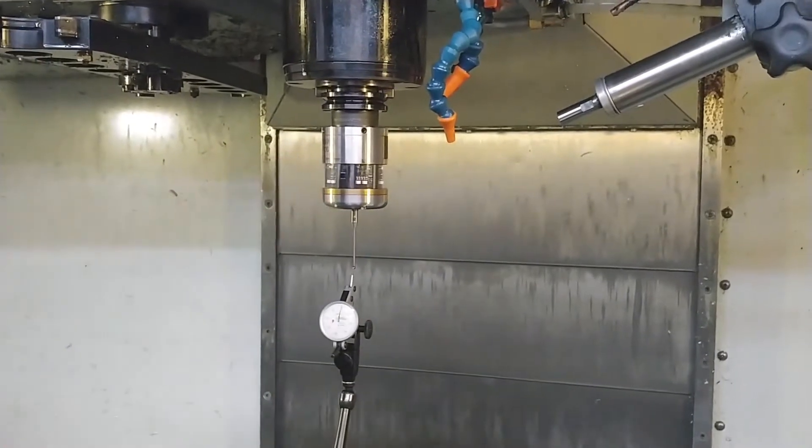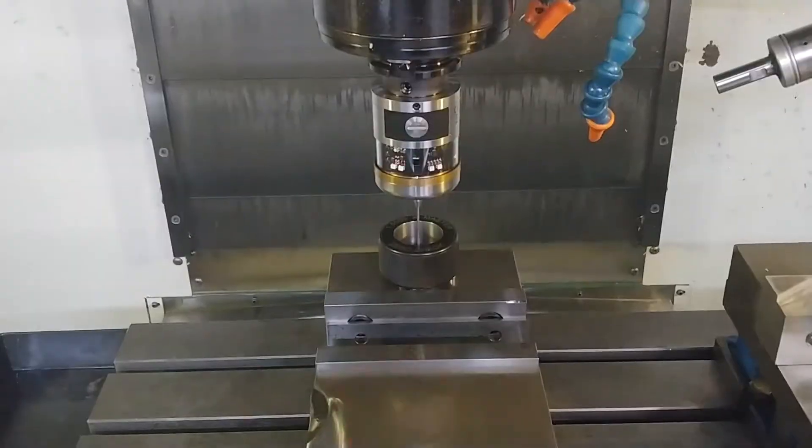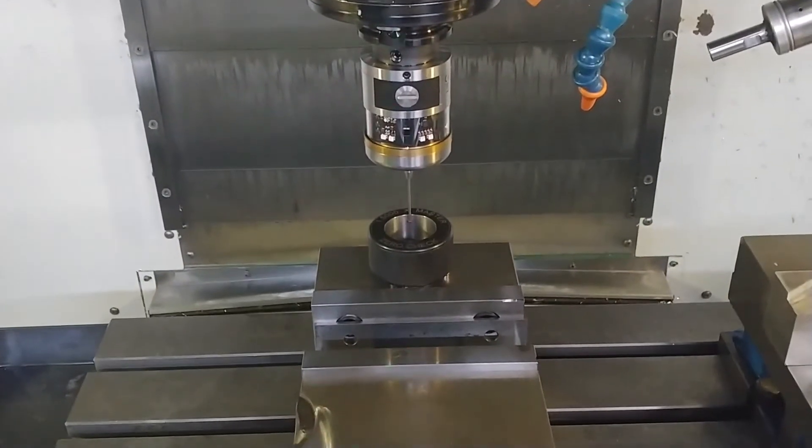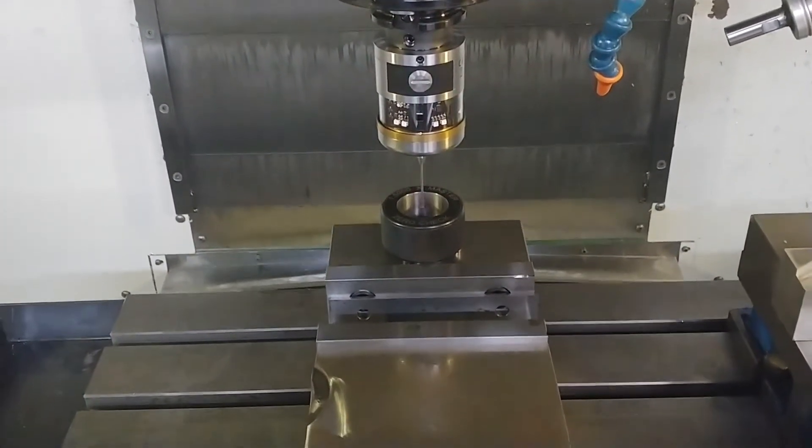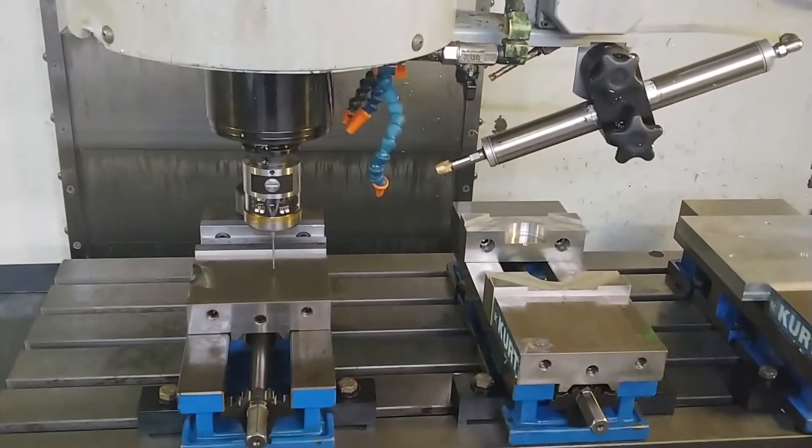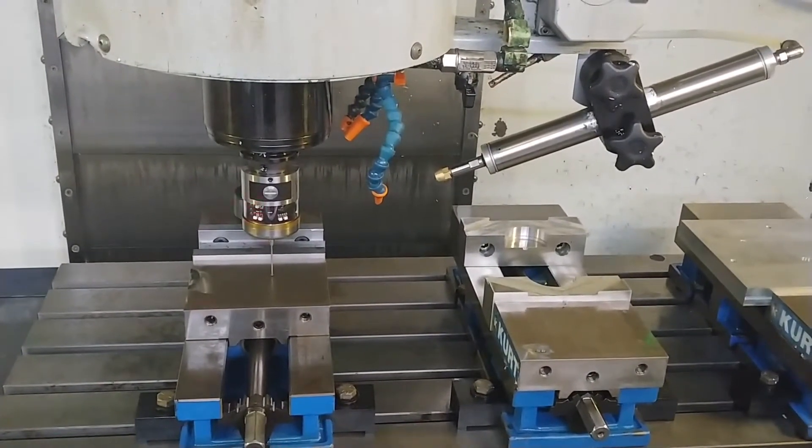To calibrate a probe, you must first indicate the stylus tip. Then you will calibrate the probe in the XY directions. Finally, you will calibrate the probe in the Z direction.